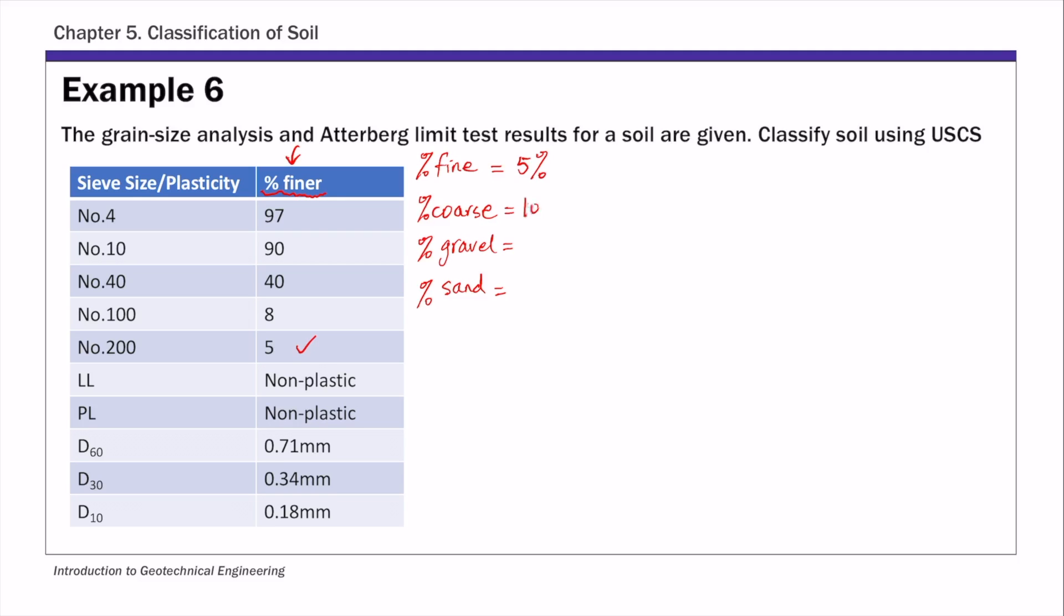And then the coarse is 100% minus percent of fines, and that's 100 minus 5, so 95% coarse-grained soil. And then the gravel - gravel is anything larger than number 4 sieve. So we have 97% finer than number 4, which means we have 100 minus 97, that's 3% coarser or retained above. So it's 100% minus percent passing or finer than number 4. So that's 100 minus 97%, and that's 3% gravel. Sand is 95 minus 3, so that's 92%.